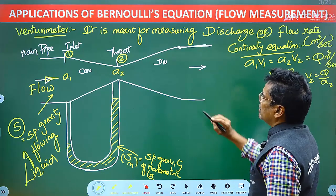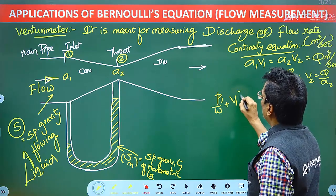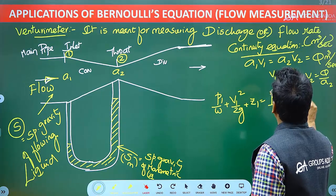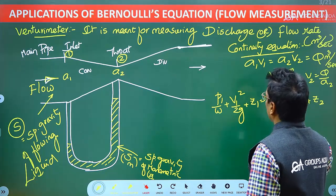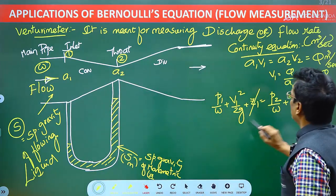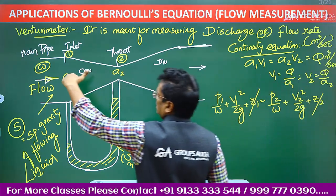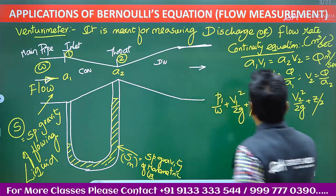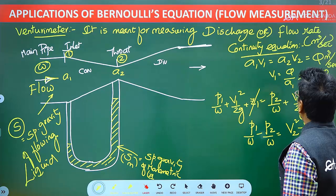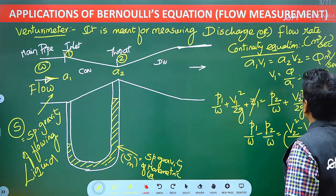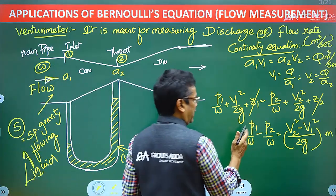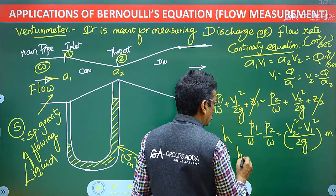Applying Bernoulli's equation between sections 1 and 2: P1/W + V1²/2g + Z1 equals P2/W + V2²/2g + Z2, where W is the specific weight of the flowing liquid. If Z1 and Z2 are at the same height, then P1/W minus P2/W equals V2² minus V1², all divided by 2g. This difference in pressure heads between sections 1 and 2 is called H.